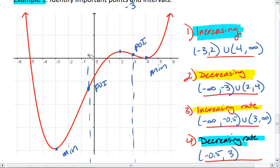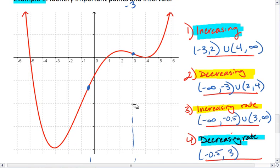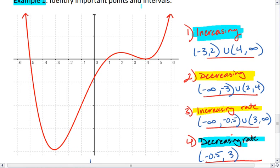If I wanted to, I could have asked you to go ahead and just label each section as increasing at an increasing rate, increasing at a decreasing rate, and so on. In which case, you would mark all of those important points: the points of inflection, the min, the maxes.